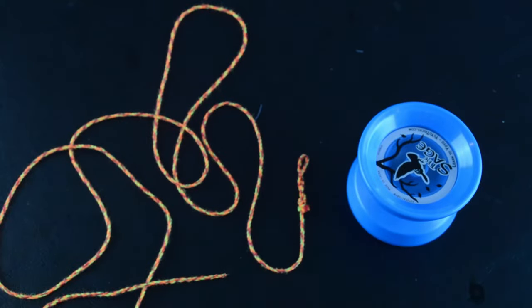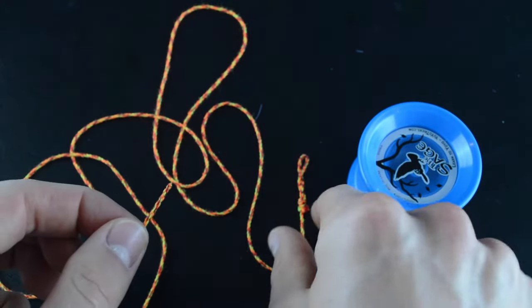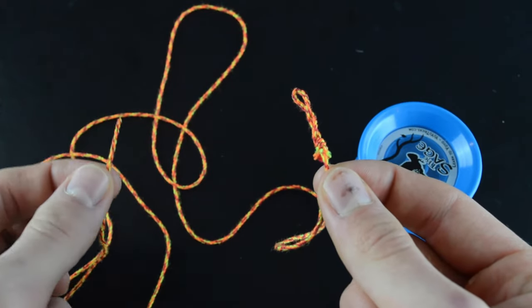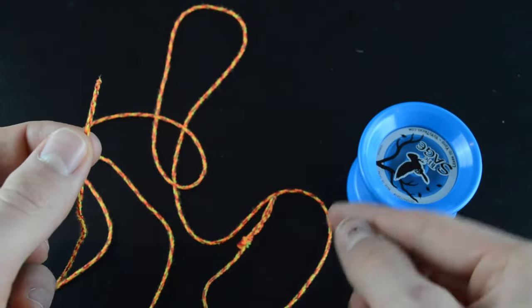Once you have your yo-yo string, you'll notice that it has two ends. One end will have a loop, and one end will look like a normal piece of string. Go to this normal looking end and untwist the string, like this.